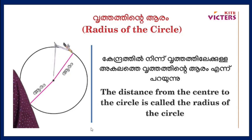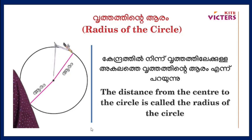The distance from the center to the circle is called the radius of the circle. We call it a center of the circle.